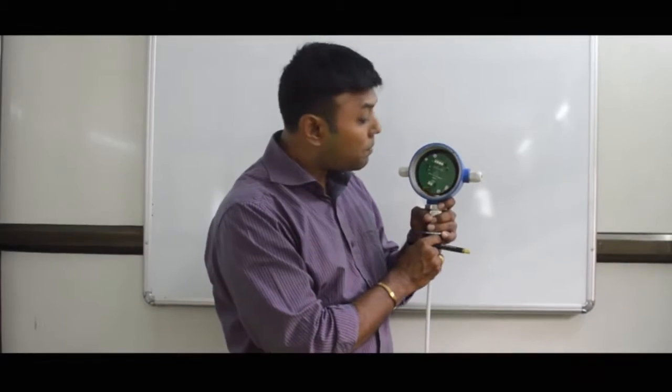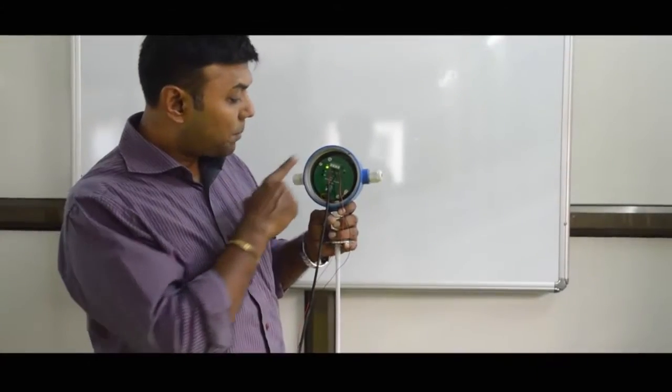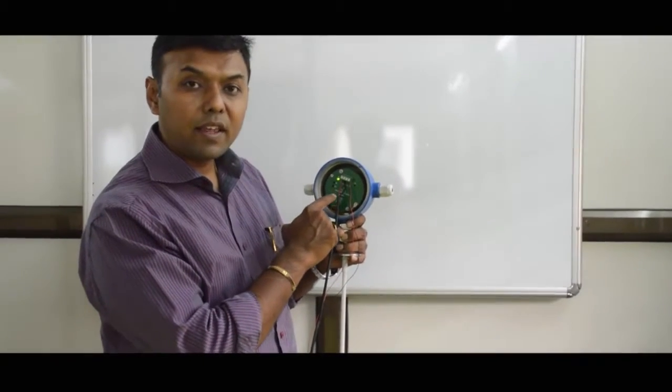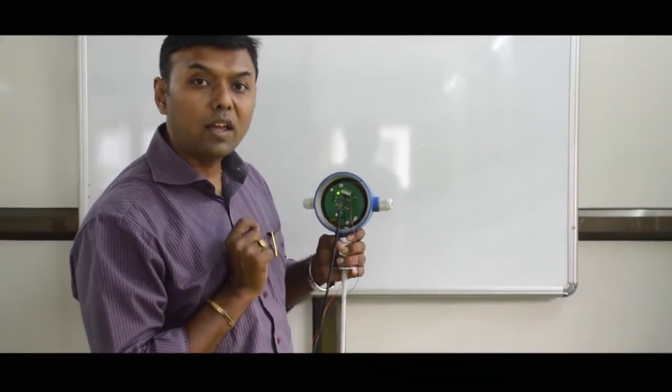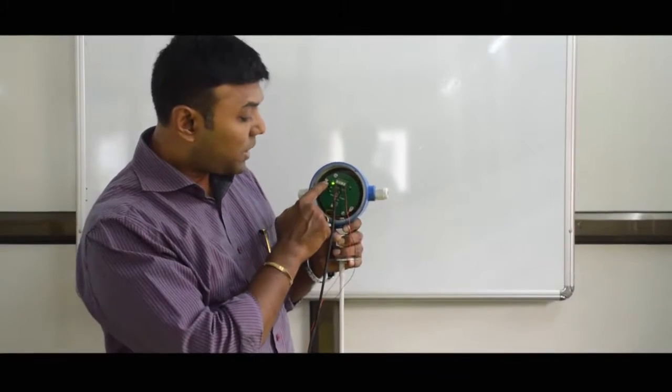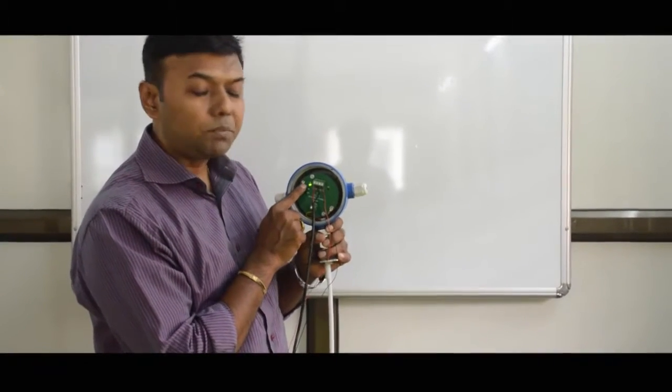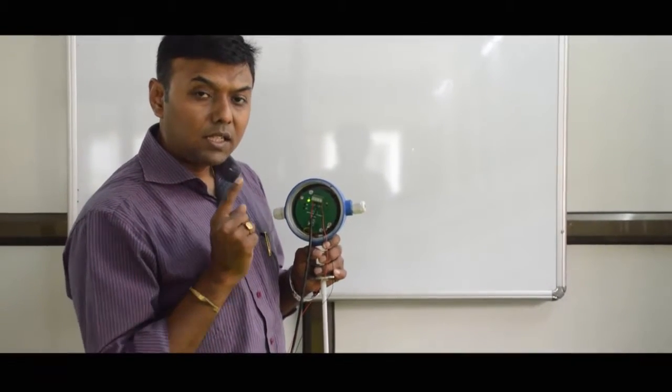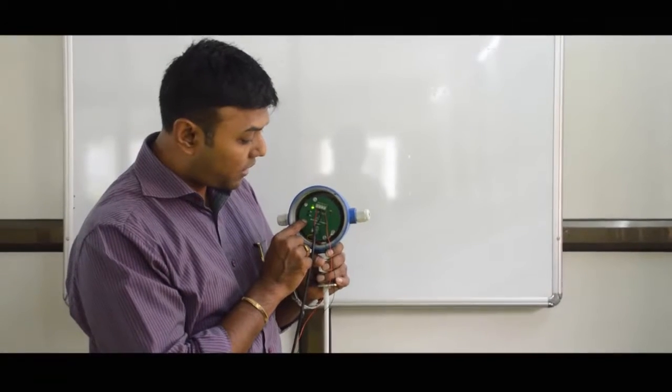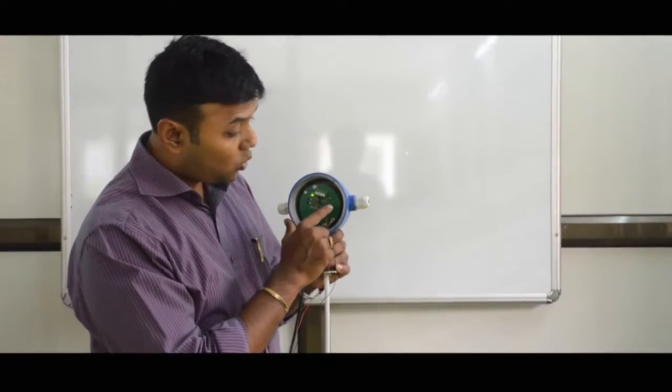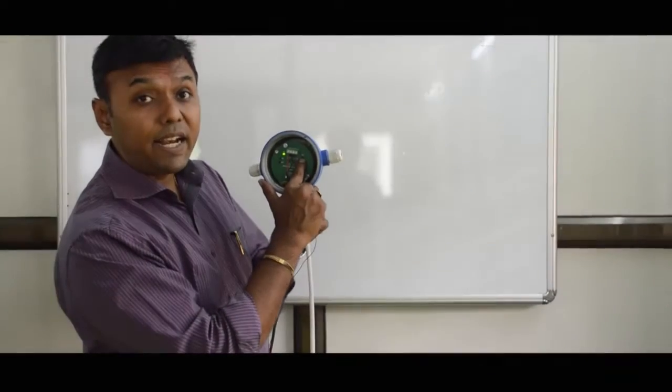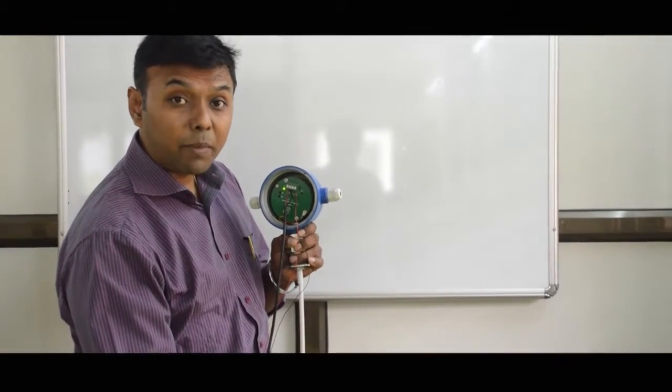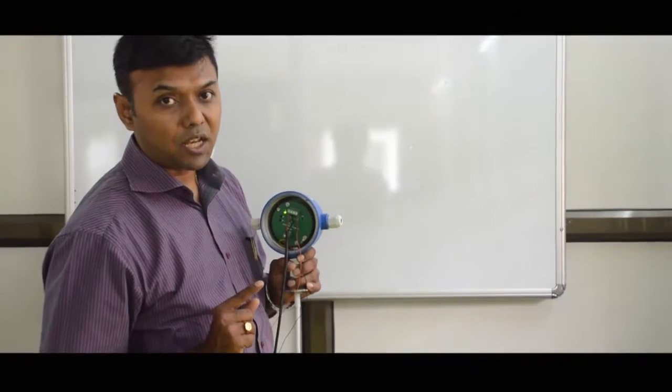Let's give it power supply. Power supply is given. After this, we will first check whether our electronic card is in working condition or not. There are two buttons - minimum and maximum. We will first press the minimum push button for three seconds. When I press and hold the minimum push button for three seconds, you can see the calibration LED will blink, and at that time this multimeter should show 4 milliampere.